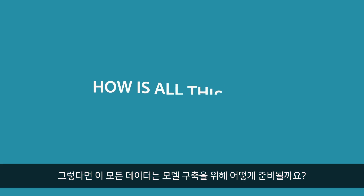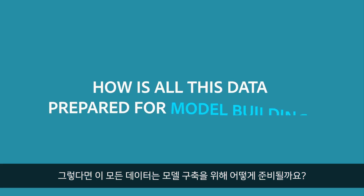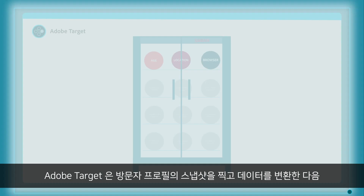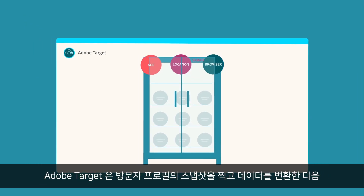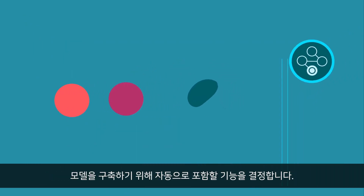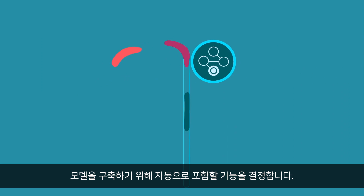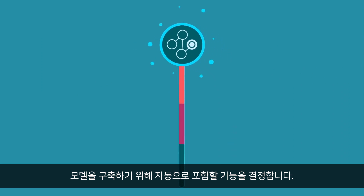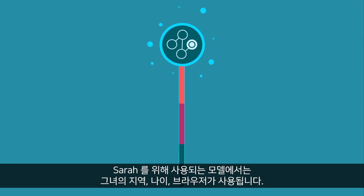So, how is all this data prepared for model building? Adobe Target takes a snapshot of the visitor profile, transforms the data, and then decides what features to include automatically to build its model. In our model used for Sarah, her location, age, and browser are used.